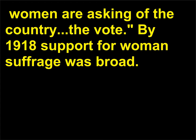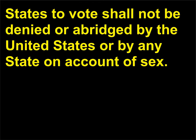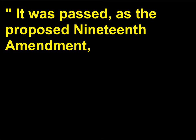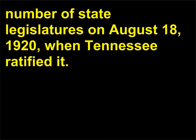By 1918 support for women's suffrage was broad. That year Congress proposed a constitutional amendment stating that the right of citizens of the United States to vote shall not be denied or abridged by the United States or by any state on account of sex. It was passed as the proposed 19th Amendment in the House in 1918 and in the Senate in 1919. The amendment was approved by the required number of state legislatures on August 18, 1920, when Tennessee ratified it.